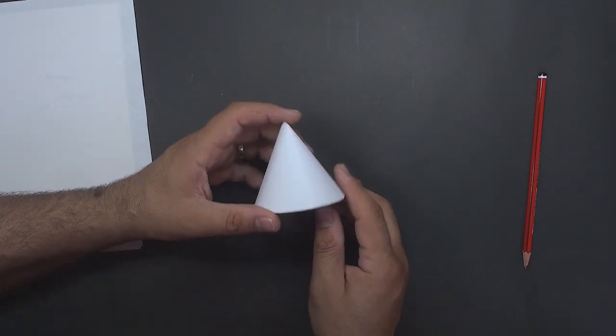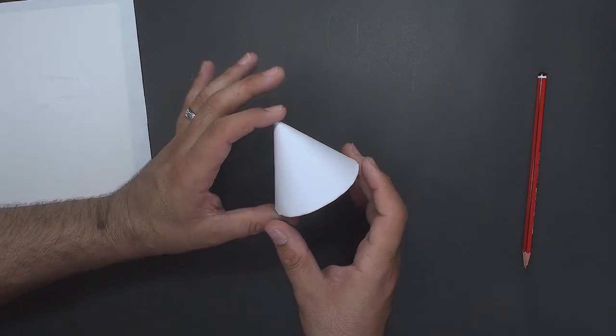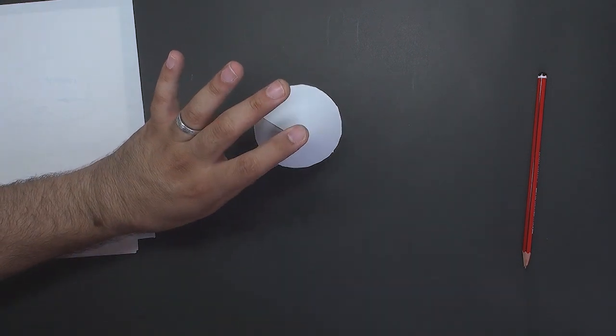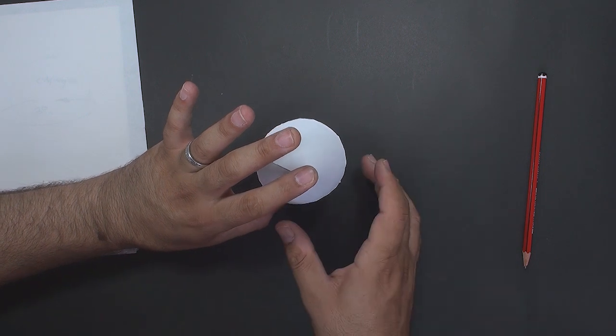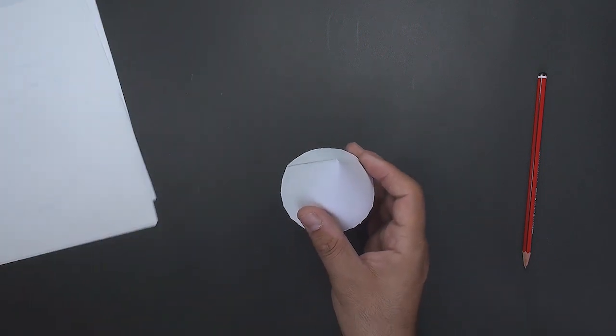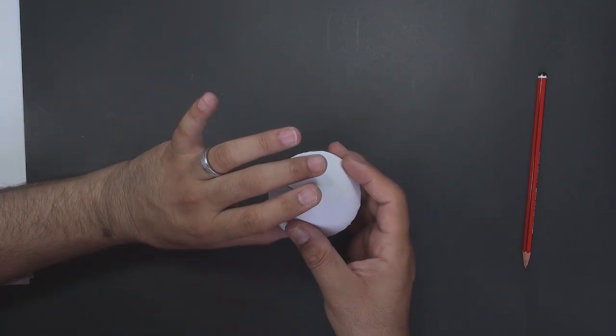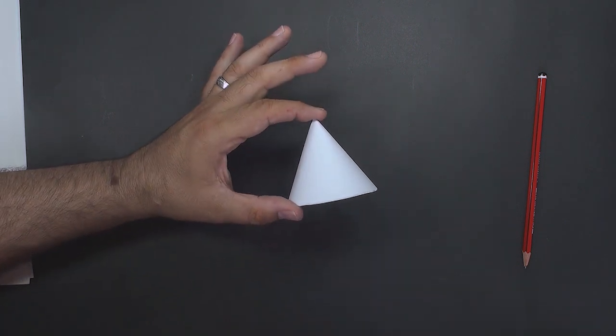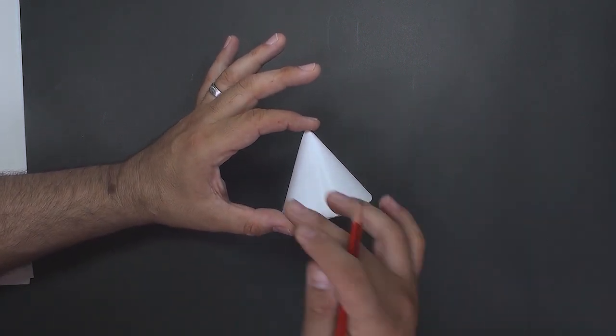The cone is our first volume to draw. When I look at the cone from above, I see it as a circle. Yes, the cone is a complete circle from above. If we look at the cone side by side, we see it as a triangle.